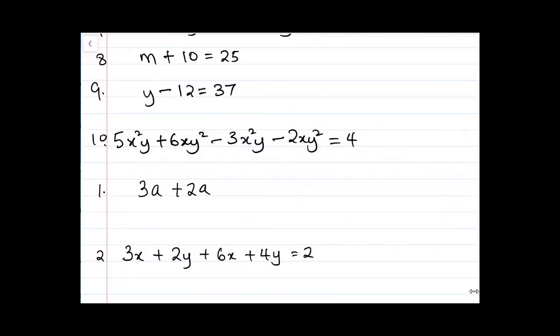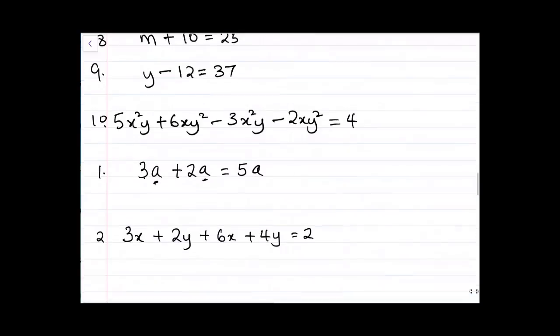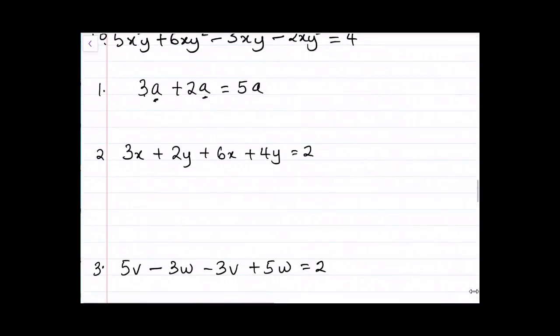Look at the first one. We have 3a plus 2a equals 5a. So we have 3 and 2, and we can notice that there are similar variables, a and a. So we can add them straight away. That gives us 5a. And then we'll go to the second one.